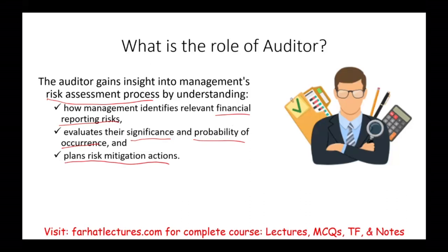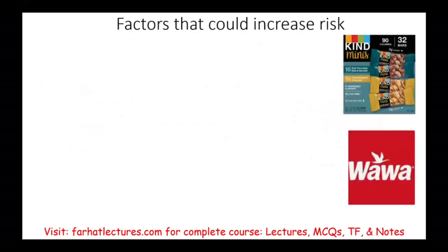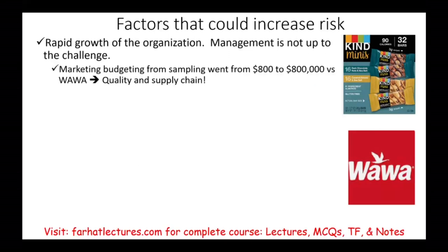What factors could increase risk that flows into financial reporting? One is rapid growth of the organization — sometimes management is not up to the challenge when the company grows very fast. For example, Kind, a healthy snacks company, grew very fast when another company invested in them, going from a sampling budget of $800 to $800,000, and eventually $800 million. The company experienced rapid growth and may not have been able to keep up — a good risk, but a risk nonetheless.